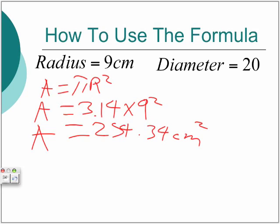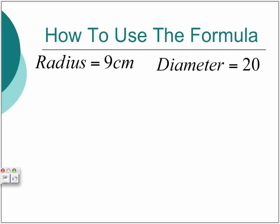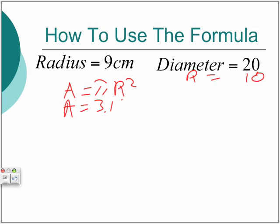Here's a second example. If you're given the diameter, you have to change it to radius. Since radius is half of the diameter, you just divide it by 2 — so that's 10. Then you calculate 3.14 times 10.